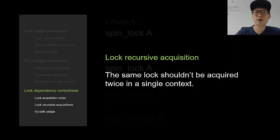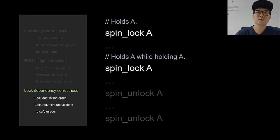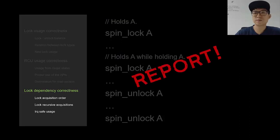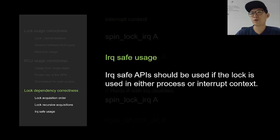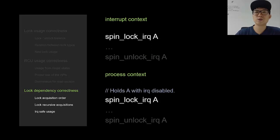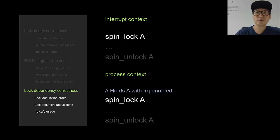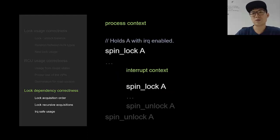The same lock shouldn't be acquired twice in a single context — this code is definitely problematic, so LockDev reports it. Also, IRQ-safe APIs should be used if a lock is used in both process context and interrupt context. If spinlock A is used in both contexts, spin_lock_irq APIs should be used. Using plain spin_lock in that situation would lead to deadlock, so LockDev reports it as a problem.